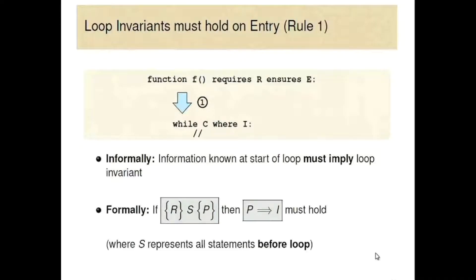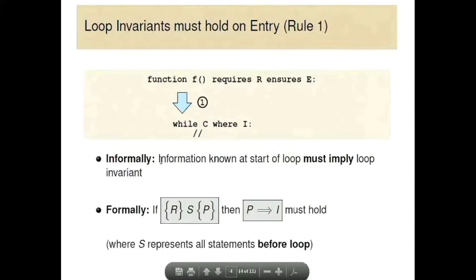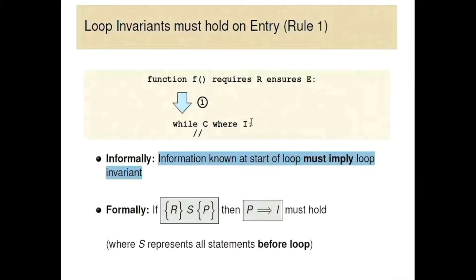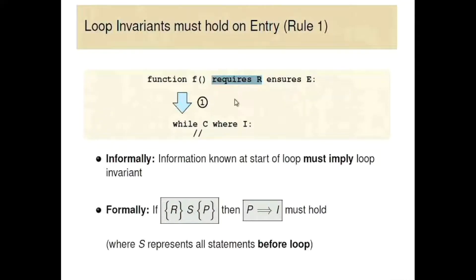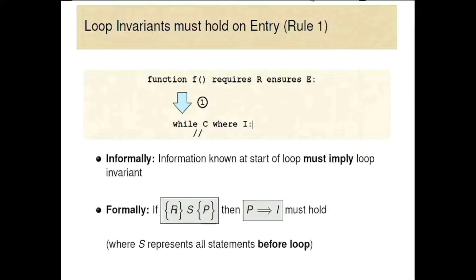I'm going to use that notation to try to explain in a concise fashion what these rules mean. So the first thing is: information known at the start of the loop must imply the loop invariant. So what we know coming in must imply the loop invariant itself. I write it like this — r, which is whatever we know before our loop, which in this case is the requires clause since there are no other statements. Given r, then whatever statements going into the loop give us p, and p must imply the loop invariant.